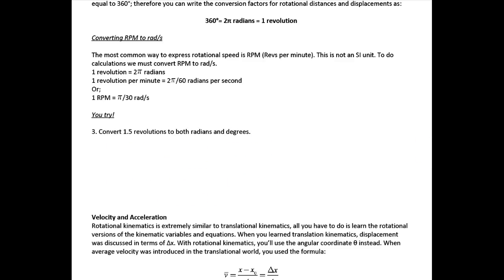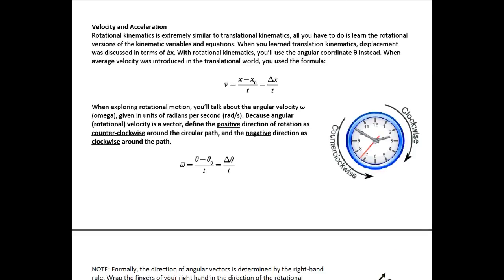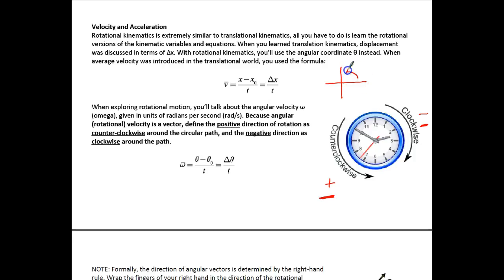Next, we'll talk about angular velocity and acceleration. Normal velocity is change of position over change in time, delta x over t. For rotational motion, angular velocity is a vector, so we think about positive and negative. Anything going counterclockwise is positive, and anything going clockwise is negative. That's because positive angle measurements go up and to the left, while negative go down to the right.